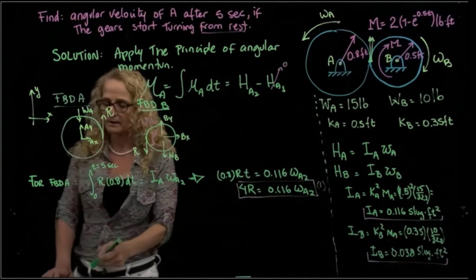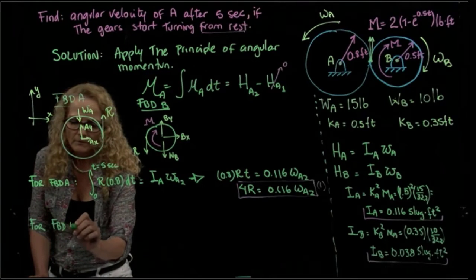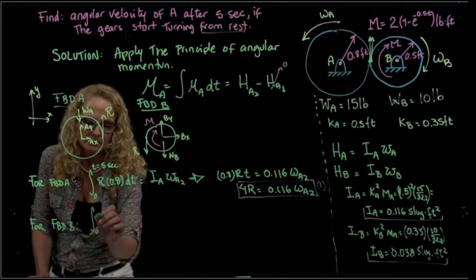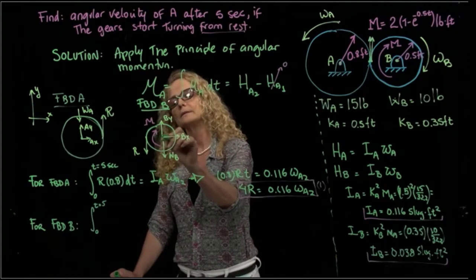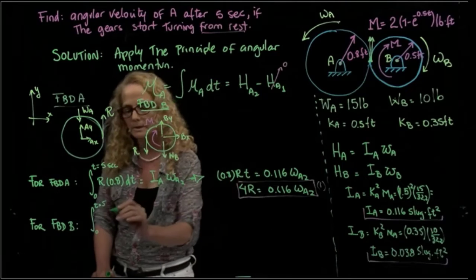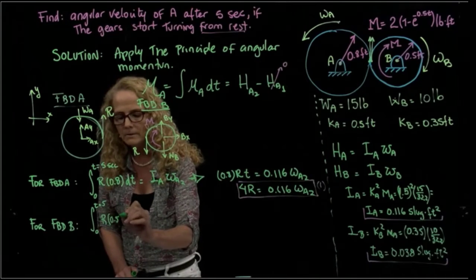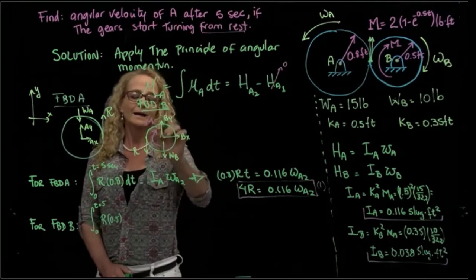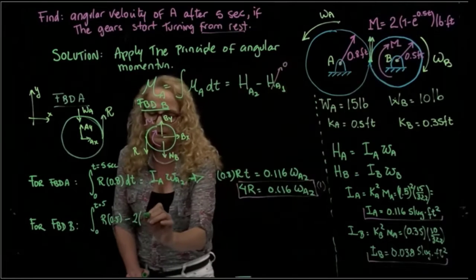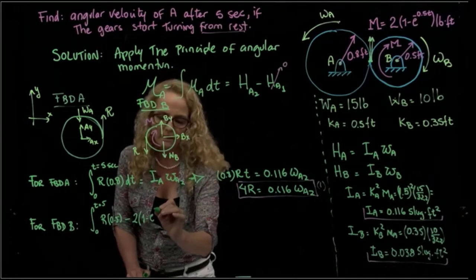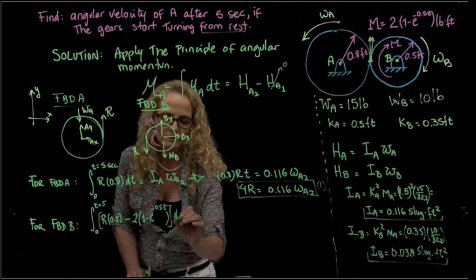Okay, so for the free body diagram of B, I have the integral 0 to time, which is also 5 seconds. Now I have my reaction times this radius, which will be reaction times radius of B, which is 0.5, is also positive that moment. And then I have that moment, negative 2, that moment is given, right, 1 minus exponential negative 0.5T. And all that, I have to integrate it with respect to time.